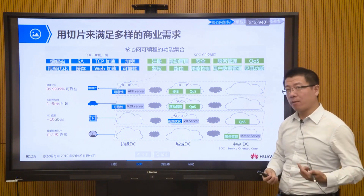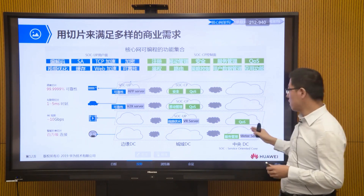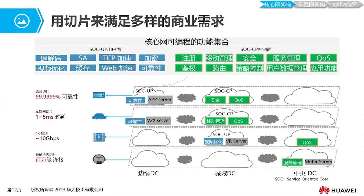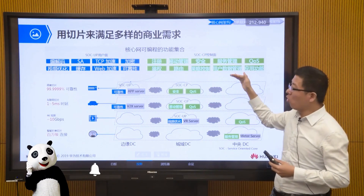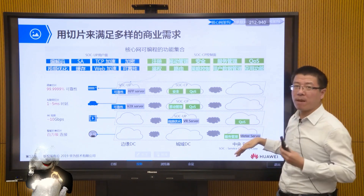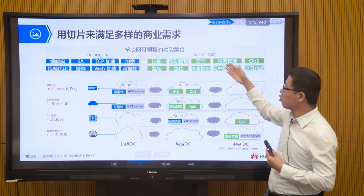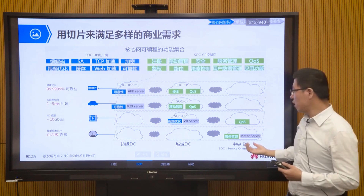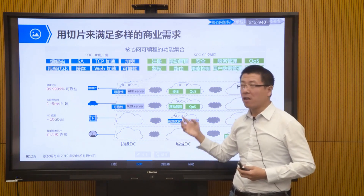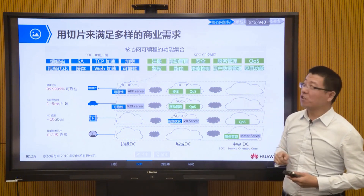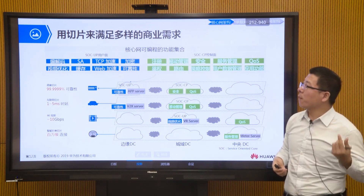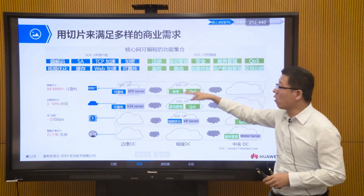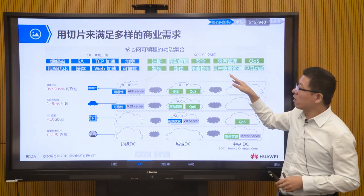When doing function orchestration for meter services like water meters and gas meters — which are installed at fixed locations — you might not need the mobility management function at all. Through this programmable function set approach, we can easily implement slice design, orchestration, and deployment. We select as needed our control plane and user plane functions and flexibly deploy them in the core data center, regional data center, or edge data center to meet differentiated business needs.